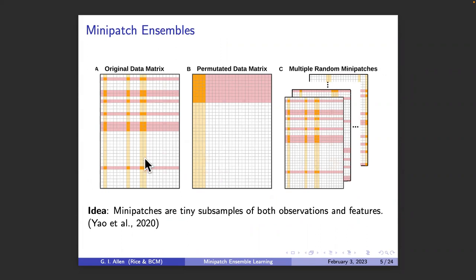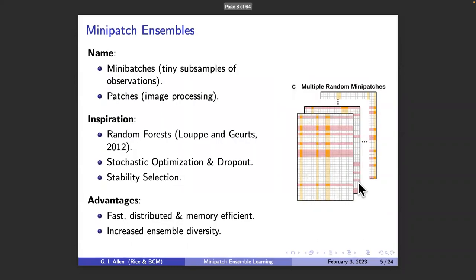Mini patch ensembles take your original data matrix and apply a double random subsampling strategy: we take a subset of the rows or observations simultaneously with a subset of the columns or features. If you permute this matrix, you get a little patch, and we do this many, many times. The name is a mixture of 'patches' from image processing and 'mini batches' from stochastic optimization. This was actually proposed in 2012 in the context of random forest ensembles to get memory-efficient versions, but hasn't really caught on that much.